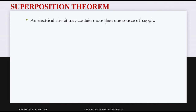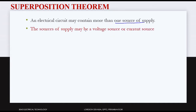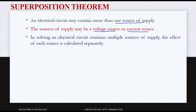An electrical circuit may contain more than one source of supply. The sources of supply may be a voltage source or current source. In solving an electrical circuit that contains multiple sources of supply, the effect of each source is calculated separately. Each source is individually considered, and finally all the sources are considered together.